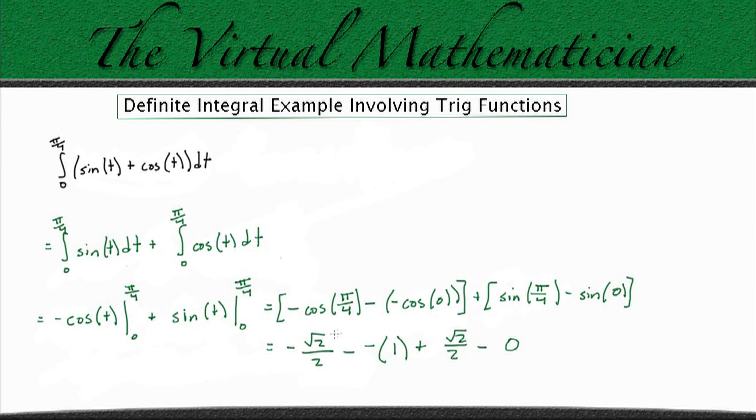So now, notice that we have a negative root 2 over 2 and a positive root 2 over 2 here. So those are going to cancel out with each other and just leave 0.